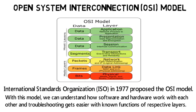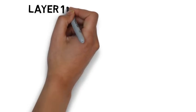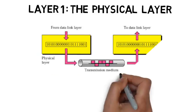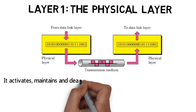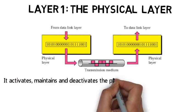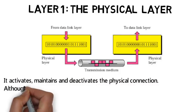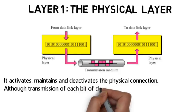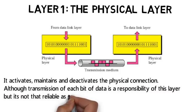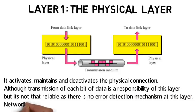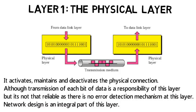The OSI model consists of a seven-layer architecture. Layer one is the Physical Layer. It activates, maintains, and deactivates the physical connection. Transmission of each bit of data is a responsibility of this layer, but it is not that reliable as there is no error detection mechanism at this layer. Network design is an integral part of this layer.